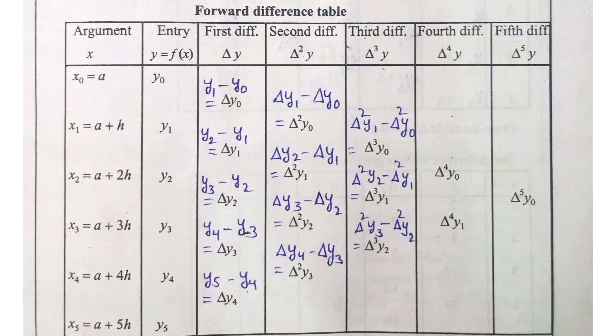The forward difference operator is represented by delta. The first order forward difference values are: delta y0 = y1 minus y0; delta y1 = y2 minus y1; delta y2 = y3 minus y2; delta y3 = y4 minus y3; delta y4 = y5 minus y4. These are the first order forward difference delta y values.